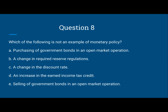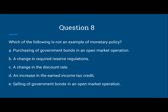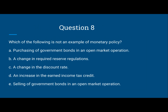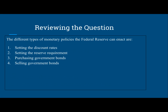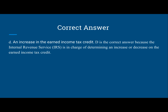Now let's look at D: an increase in the earned income tax credit. From all our different types of monetary policies that the Federal Reserve can enact, an increase in the earned income tax credit is not one of those policies the Federal Reserve would be able to do. It's a strong candidate to be the incorrect monetary policy. Now E, selling of government bonds in an open market operation — that is also one of the monetary policies the Federal Reserve can enact. So therefore, the correct answer is D.